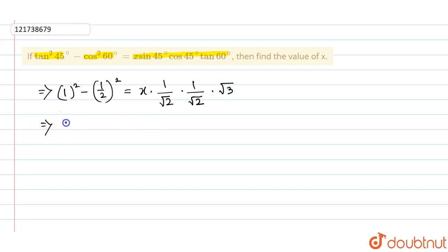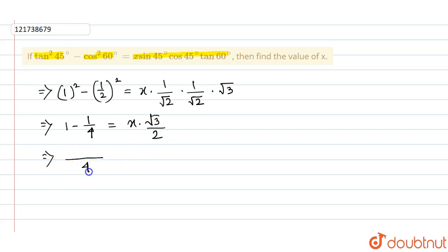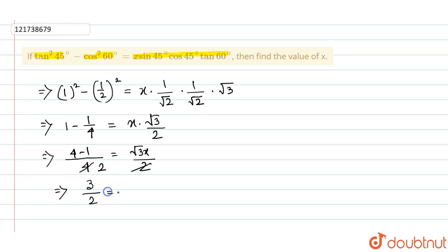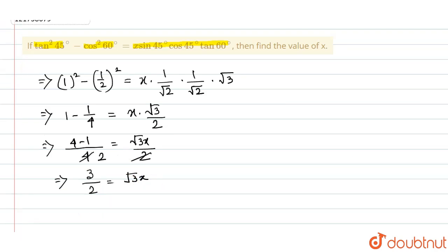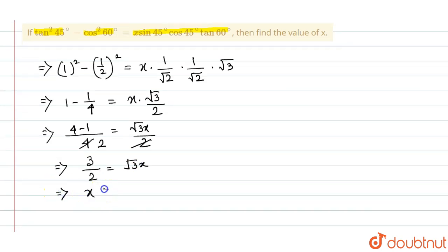So, 1 squared is 1, and 1 by 2 squared is minus 1 by 4, equals to x times root 3. So, 1 minus 1 by 4 gives 3 by 4, equals x root 3. So, 3 by 2 into root 3.